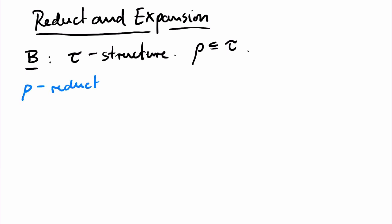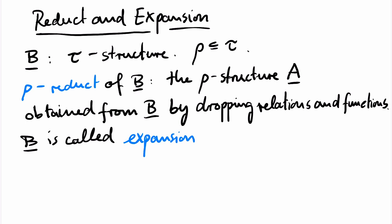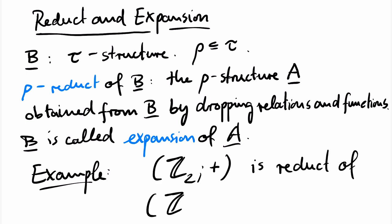then the rho reduct of B is the rho structure obtained from B by simply dropping the relations and functions that are not mentioned in rho. Conversely, if A is a reduct of B, then we say that B is an expansion of A. An example is the structure we obtain from the two-element group if we just keep the composition operation of the group.